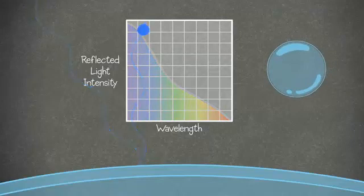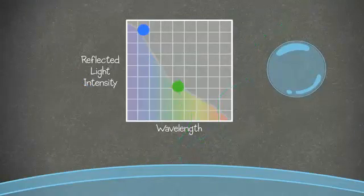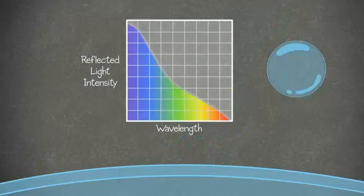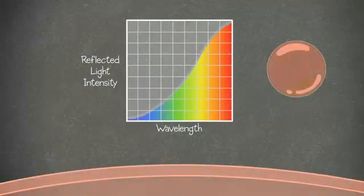We can plot how much light is reflected for the entire color spectrum. This bubble has lots of blue, some green, and very little red, so it appears greenish blue. Since we know how long light waves are, we can look at the color of the bubble and determine the thickness.